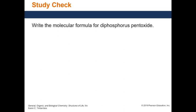Another practice question: write the molecular formula for 'diphosphorus pentoxide'. You know it's a molecular compound because you see prefixes — prefixes are never used in ionic compounds. Phosphorus = P, 'di' means two, so P2. 'Pentoxide' — oxide stands for oxygen, 'penta' means five, so O5. The molecular formula is P2O5. This covers the basics of naming molecular compounds.